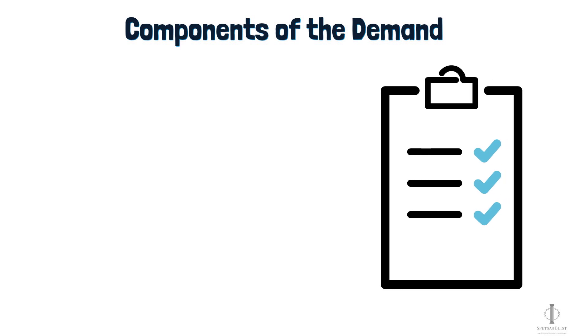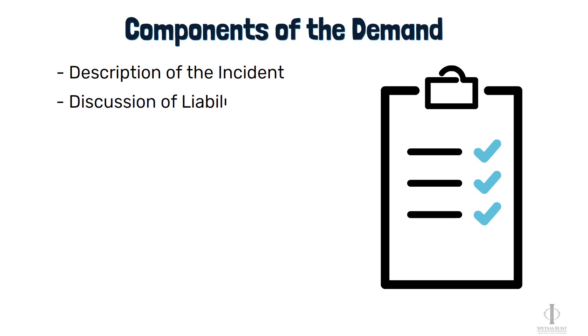Now let's talk about the components of a demand letter. The demand letter will typically have several main components, including a description of the incident — like how the incident happened, when it happened, where it happened, and who was involved. A discussion of liability, which could include a discussion about why we believe the defendant is legally responsible, and citations to the law that supports our position. A discussion of damages, which could include information about your medical treatment, your diagnosed injuries, and physical limitations.